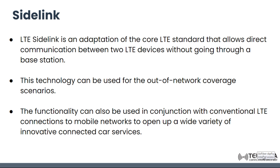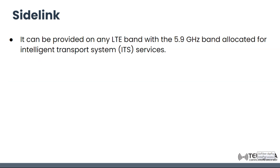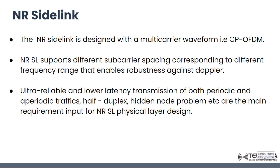Sidelink can also be used in conjunction with an LTE connection to mobile networks, opening up a wide variety of innovative connected car services. It can be provided on any LTE band, including the 5.9 GHz band allocated for Intelligent Transport System (ITS) services.